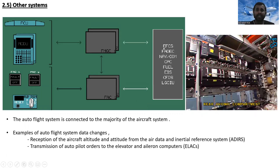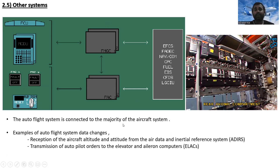The auto flight system is connected to the majority of other aircraft systems, including the electronic flight control system, FADEC, navigation, communication, CPCS, world, IEIS engine interface system, CFDS, and the landing gear control interface unit. An example of auto flight system data exchange includes reception of aircraft altitude and attitude from the air data and inertial reference system, and transmission of autopilot orders to elevator and aileron computers.